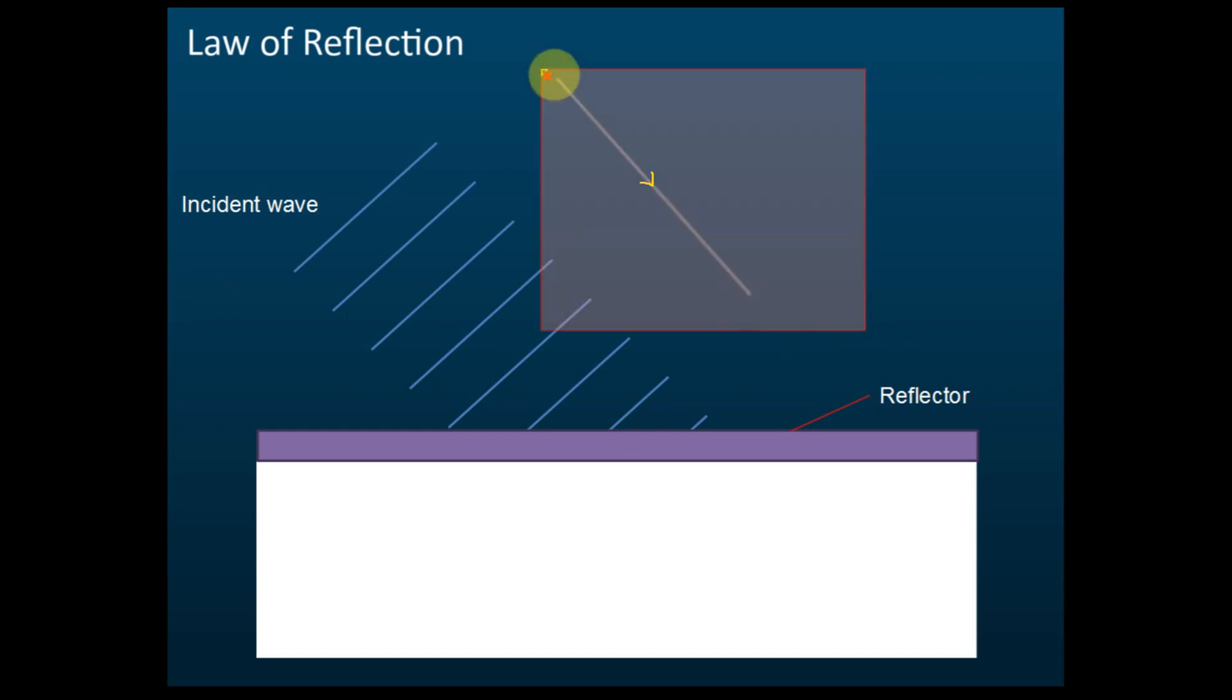So we have incident wave. This represents the wave. This is a wavefront diagram. And then the wave hits the reflector, then it's reflected.